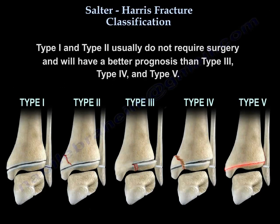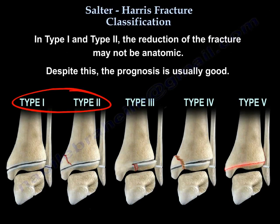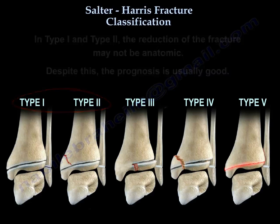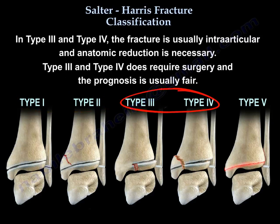Type 1 and 2 usually don't require surgery and have a better prognosis than types 3, 4, and 5. In type 1 and 2, the reduction of the fracture may not be anatomic, yet the prognosis is usually good. Type 3 and 4 fractures are usually intra-articular and anatomic reduction is necessary, so they do require surgery and the prognosis is usually fair.